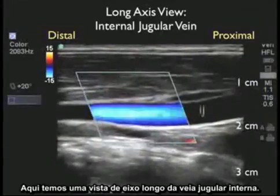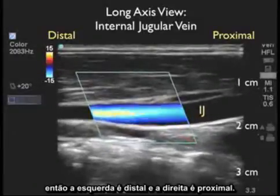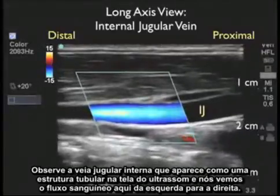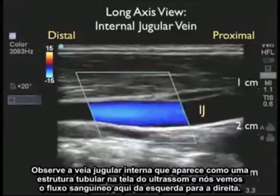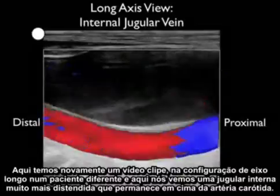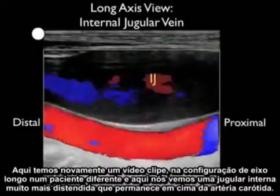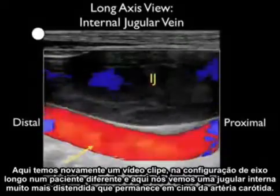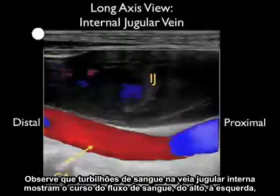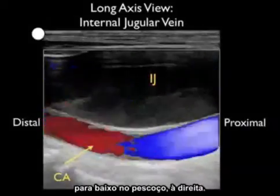Here's a long axis view of an internal jugular vein. I have the probe marker going more distally or superior within the neck, so to the left is distal and to the right is proximal. Notice the internal jugular vein appearing as a tubular structure on the ultrasound screen, with blood flowing from left to right. Here's a video clip of a long axis configuration in a different patient, showing a much more distended internal jugular vein lying on top of the carotid artery, with swirls of blood showing the course of flow from high within the neck on the left to low within the neck on the right.